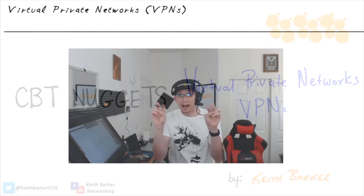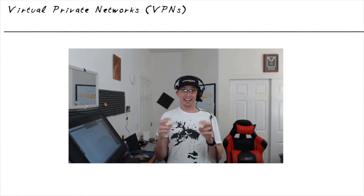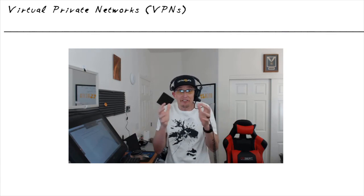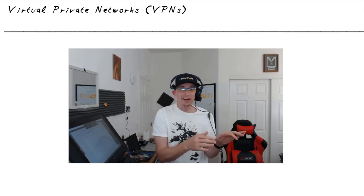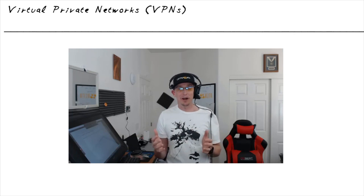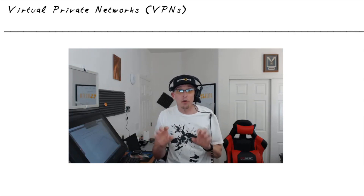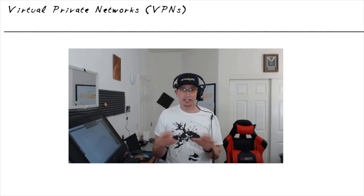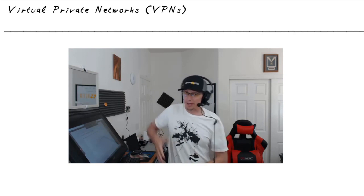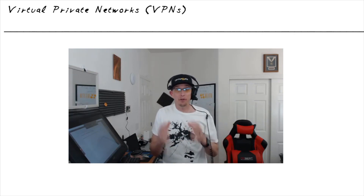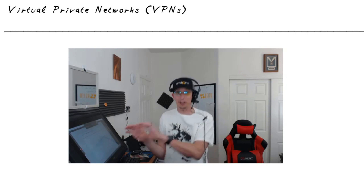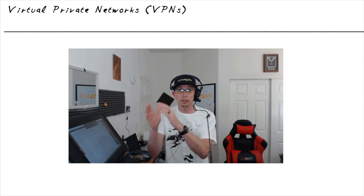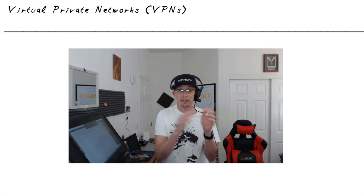When two people are having a private conversation, they expect it to be private — to have confidentiality for what's said back and forth. If we're sending sensitive information over our networks, we also want privacy and confidentiality for that information. One great tool we can put in our Batman tool belt to help enforce confidentiality for data as it goes across our networks is a virtual private network — a VPN.